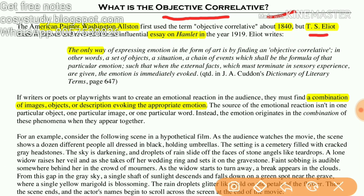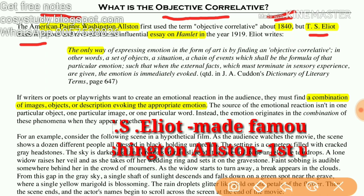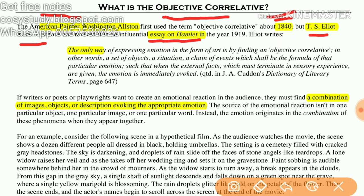The term 'objective correlative' was made famous by T.S. Eliot, but American painter Washington Allston was the first to use this term in 1840. T.S. Eliot used this term in his essay on Hamlet, in which he said that it was a failed work by Shakespeare. He wrote that essay in 1919.